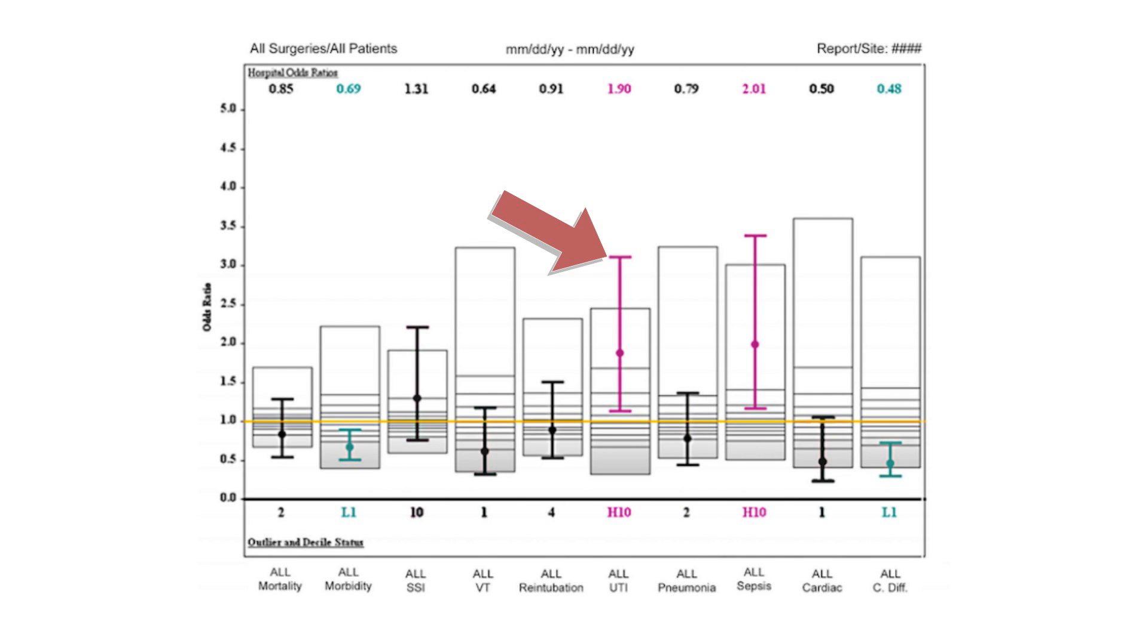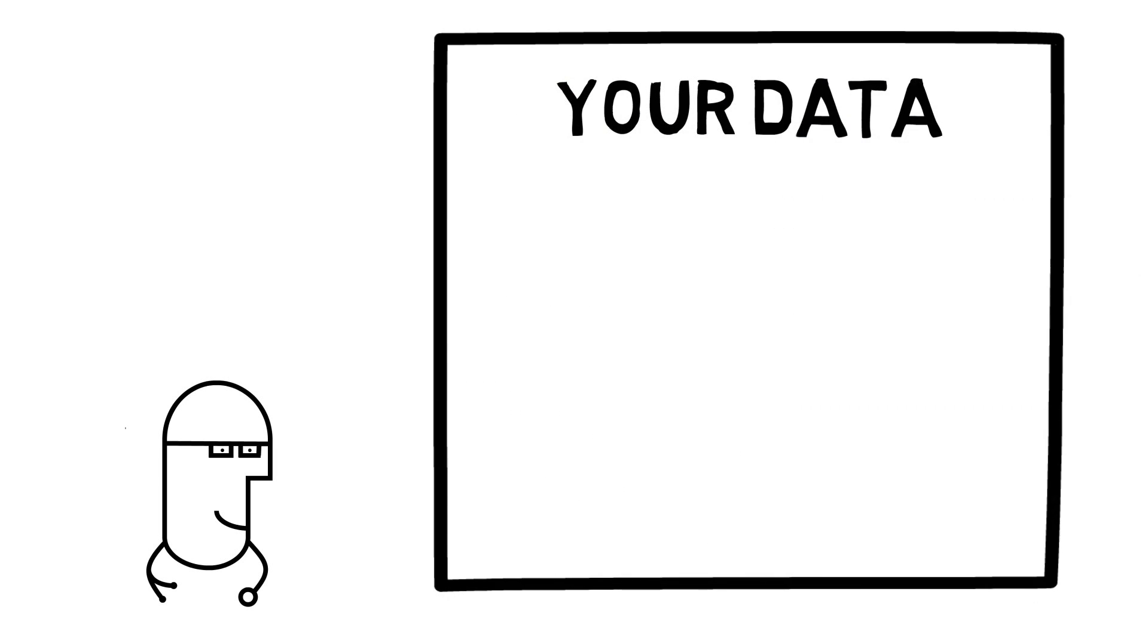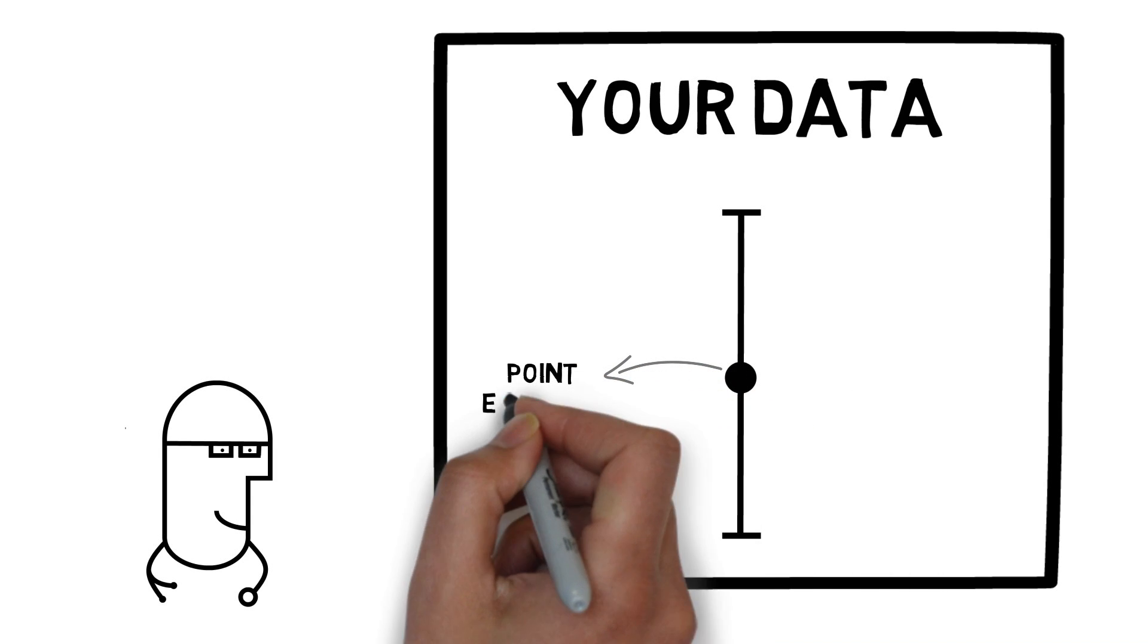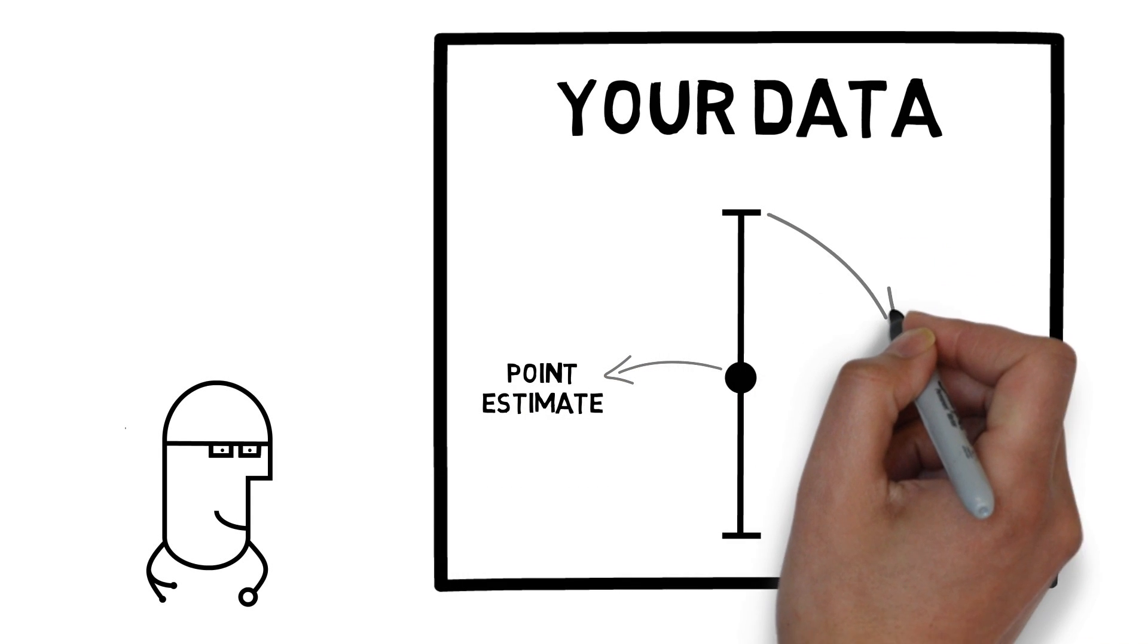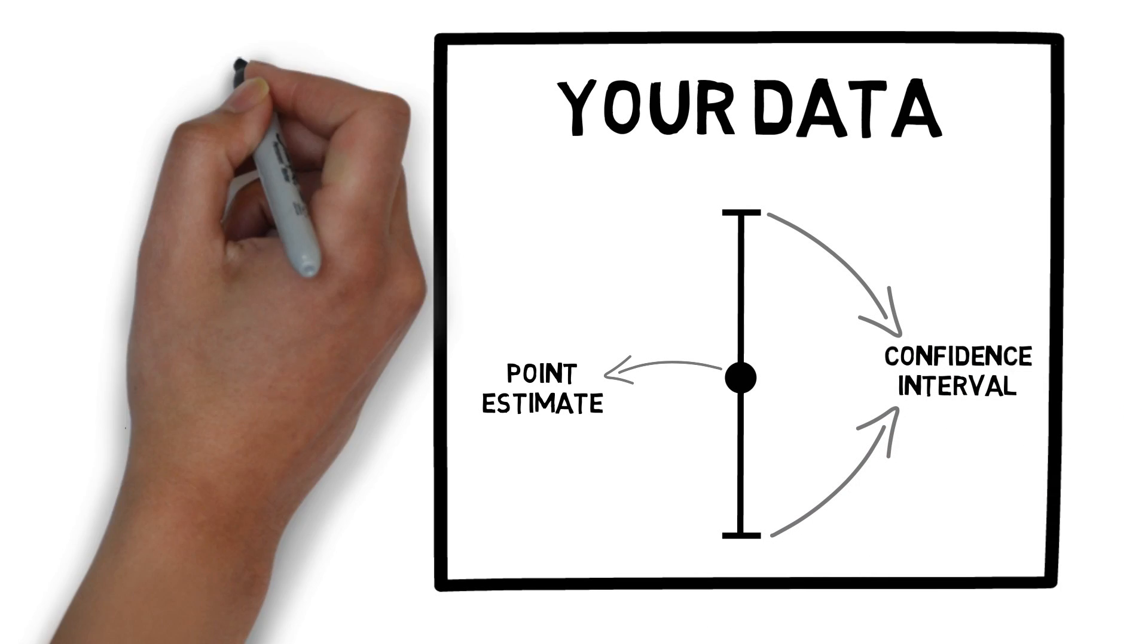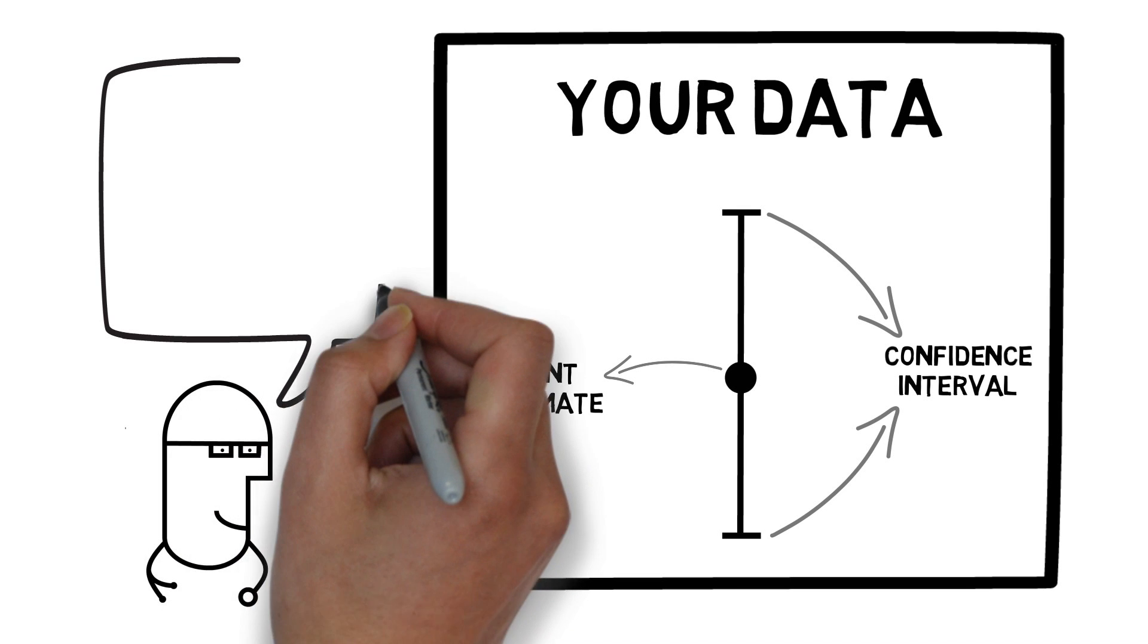The next element we need to look at are these vertical lines with dots in the middle. These represent your data. Your data are presented as a vertical line with a dot in the middle. The dot represents the point estimate for your data, and the vertical line represents the extremes of a confidence interval around that point estimate.